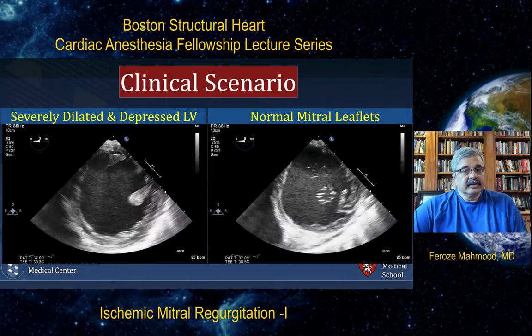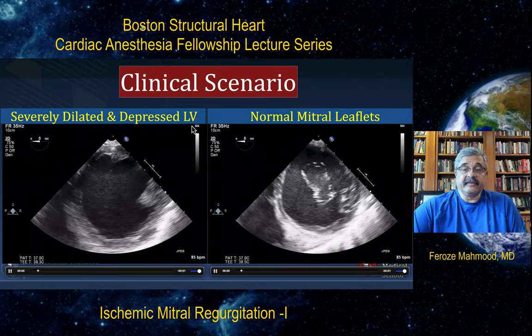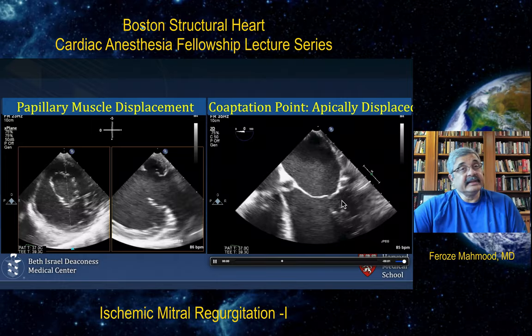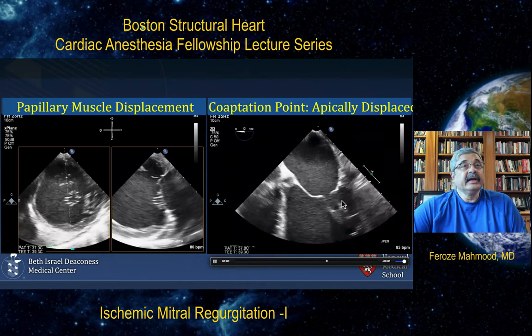This tethering and apical displacement of the coaptation point in two dimensions is seen either as tenting height — the distance between the plane of the annulus and the point of coaptation, normally about 0.6 centimeters; anything more implies significant leaflet tethering — or tenting area, the area subtended under the mitral annulus. One centimeter squared is considered normal, and anything beyond that is considered an abnormal tenting area.